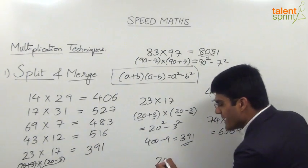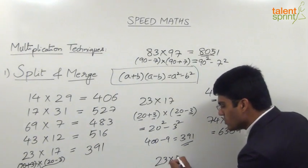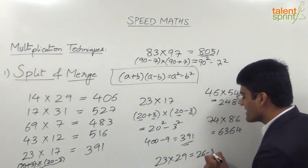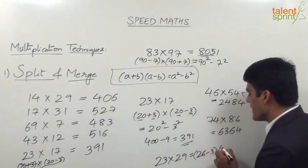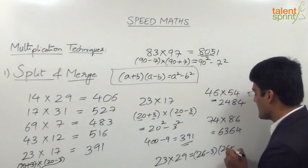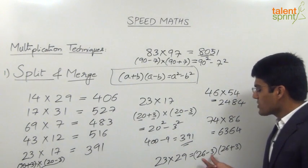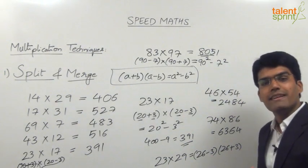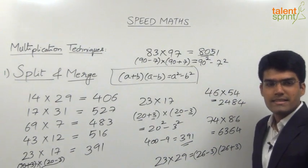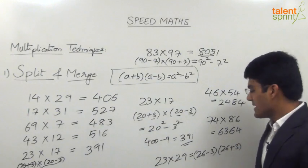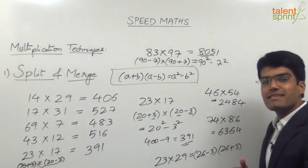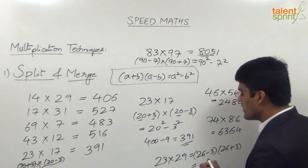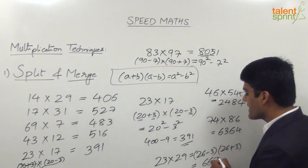Similarly, if the question is 23 into 29, it can be taken as (26 - 3)(26 + 3), that is 26² - 3² = 676 - 9 = 667.